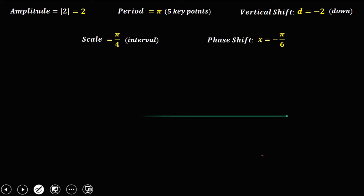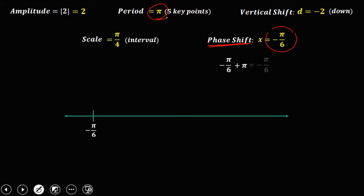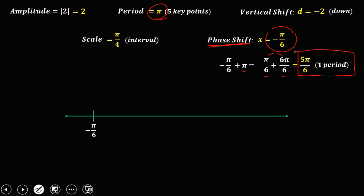Start plotting at the phase shift, which is negative π over 6. Then from the phase shift, add the period π: negative π over 6 plus π. Rewrite π as 6π over 6 to get a common denominator, so negative π plus 6π gives positive 5π over 6. This is the end of one period, or 5 key points.